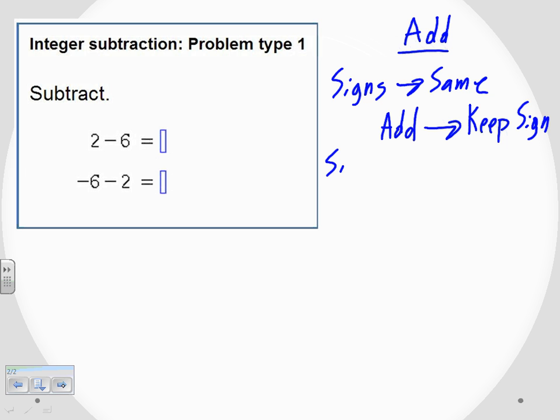And the other possibility is that when the signs are different, we are to subtract the numbers. And since we have different signs, we have to choose which one to keep. We keep the sign of the larger.